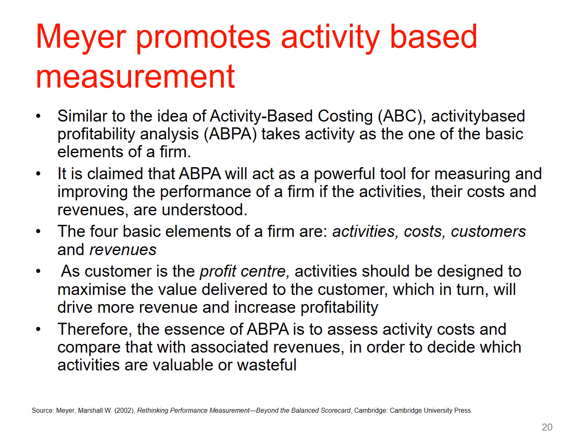Mayer promotes an activity-based measurement system similar to activity-based costing. Activity-based profitability analysis takes activity as one of the basic elements of the firm. It's claimed to act as a powerful tool for measuring and improving performance if the activities, their costs and revenues are understood. The four basic elements of a firm are its activities, its costs, its customers and its revenues. As the customer is the profit centre, activity should be designed to maximise value delivered to the customer, which drives revenue and increases profitability. The heart of activity-based profitability analysis is to assess activity costs, compare with revenues, and decide which activities are valuable or wasteful — it has elements of lean and classic activity-based costing.